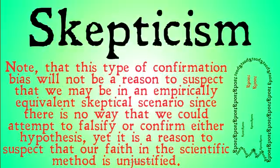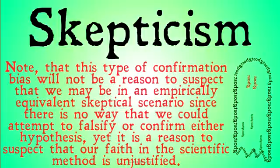Note that this type of confirmation bias will not be a reason to suspect we might be in an empirically equivalent skeptical scenario — a la the duplication argument — since there's no way we could even attempt to falsify or confirm either hypothesis. Yet it is a reason to suspect that our faith in the scientific method is unjustified, or that perhaps we're in a skeptical scenario that isn't empirically equivalent, where something might be different — maybe a dream or the Matrix — one of those weaker-seeming skeptical scenarios that we can investigate.